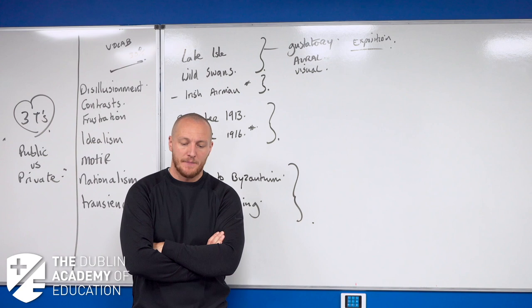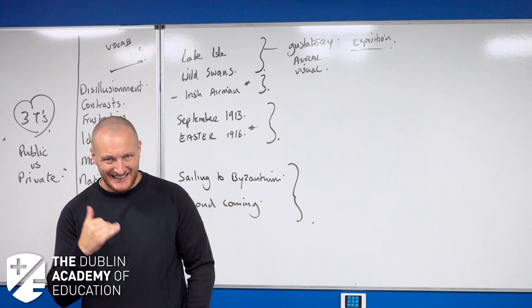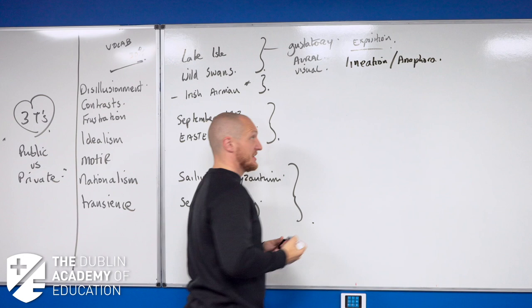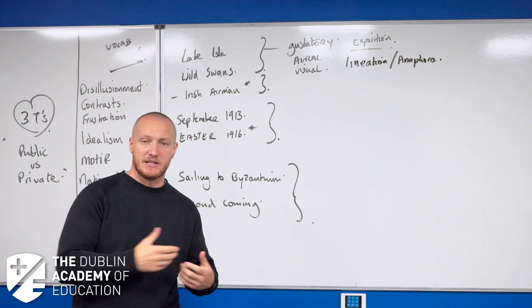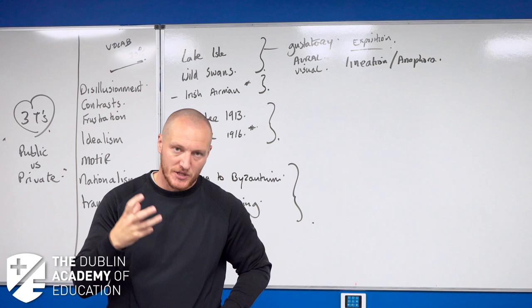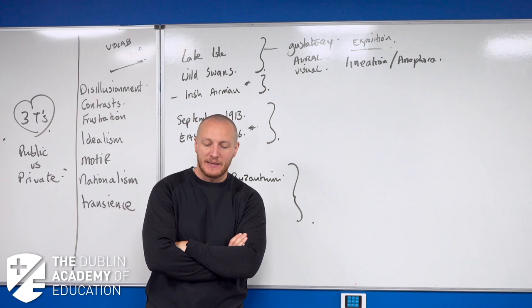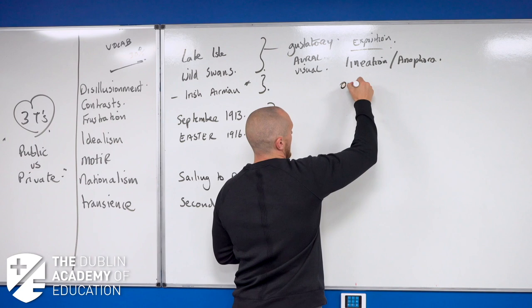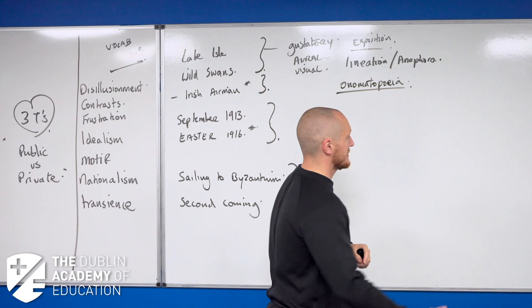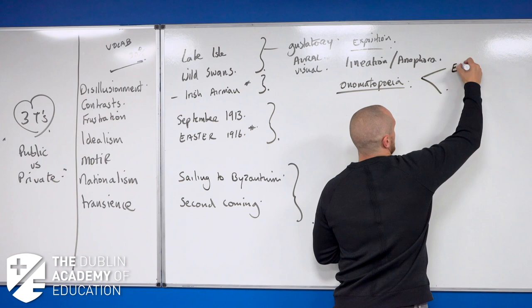Third and final stanza: 'I will arise and go now'—there's our lineation again. We remind ourselves about that term. You could describe it as anaphora as well. H4 and H5s will describe it as pure repetition. You, on the other hand, now have the ability to describe it as lineation or indeed anaphora. 'I will arise and go now, for always night and day'—so there's always the constant thought about this place. 'I hear lake water lapping'—so the assonance there. There's two types of onomatopoeia. Onomatopoeia is when the word sounds like the action, so 'lapping' there, for example.